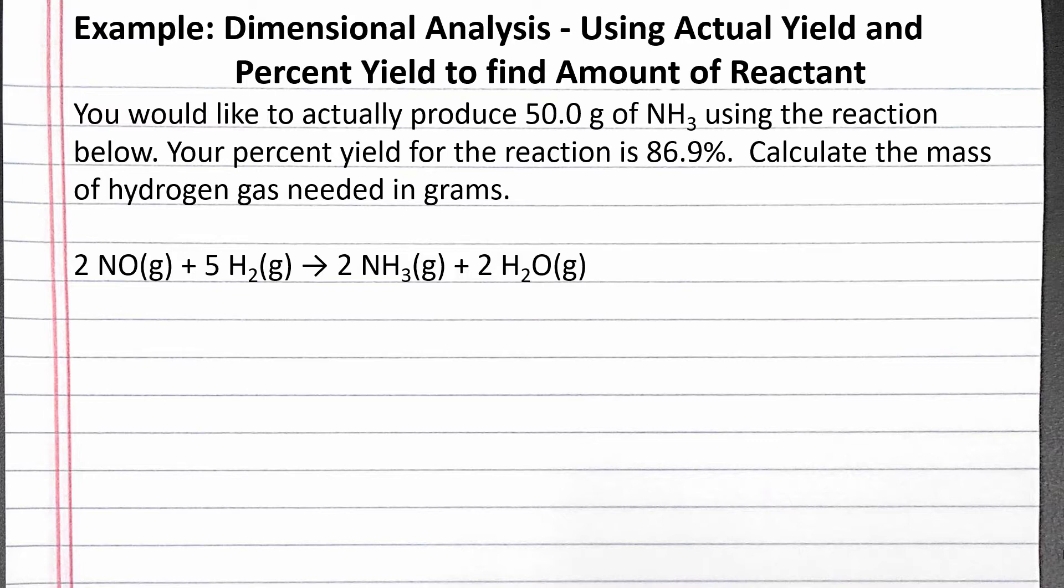To solve this problem, our first step will be to calculate the theoretical yield based on the actual yield and percent yield. Then we can use dimensional analysis to convert from mass of product to mass of reactant.